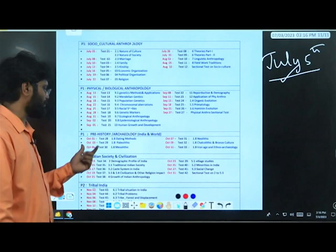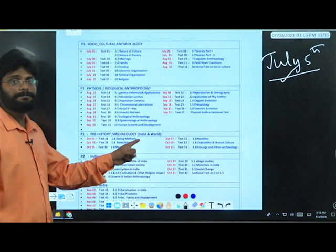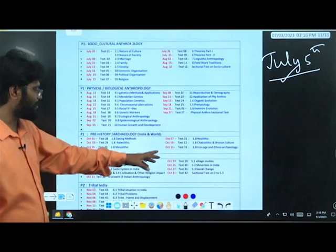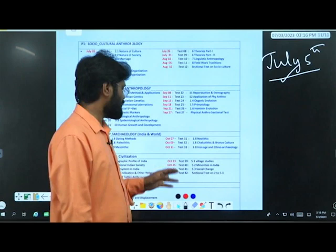When it comes to prehistory and archaeological anthropology, here you can see: October 1st you will write a test on dating methods, October 3rd on paleolithic cultures from India as well as world, October 5th mesolithic cultures from India and world, October 7th neolithic cultures, October 9th chalcolithic and Bronze Age cultures, and October 11th Iron Age and ethnoarchaeology. This is the way you will finish the archaeological anthropology branch also by going unit tests.